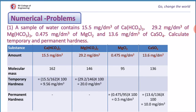Numerical problem: Different amounts of hardness-causing substances are given; we have to calculate temporary and permanent hardness. First, identify which salts are responsible for temporary hardness and which for permanent hardness. Calcium bicarbonate and magnesium bicarbonate are responsible for temporary hardness. Using the formula, the temporary hardness due to calcium bicarbonate is 9.56 mg/dm³ and magnesium bicarbonate is 20 mg/dm³. Similarly, magnesium chloride gives 0.5 mg/dm³ and calcium sulfate gives 10.0 mg/dm³ of permanent hardness.